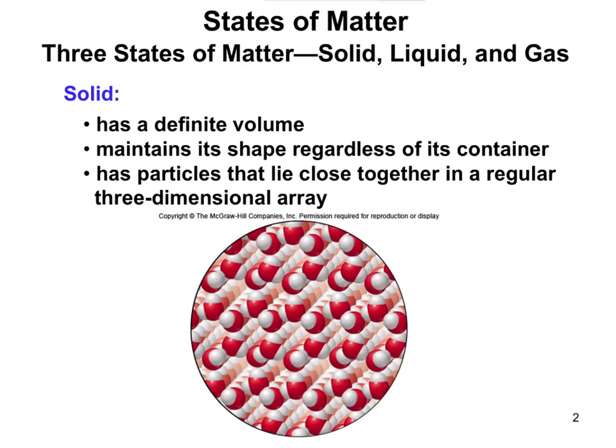You've all heard of this before, but let's go over it briefly. Matter comes in three forms: solid, liquid, and gas. Solids have a fixed volume and maintain their shape regardless of the container. So if you were to take a baseball and put it in a bowl, the baseball does not change shape — it's a solid.